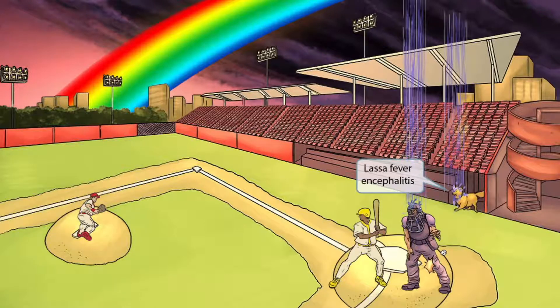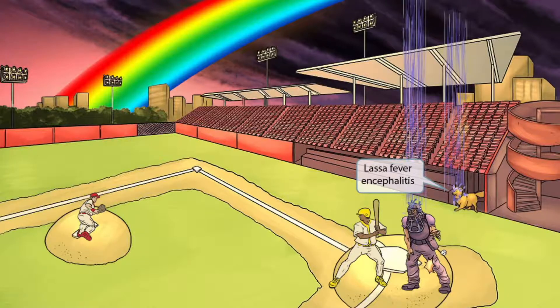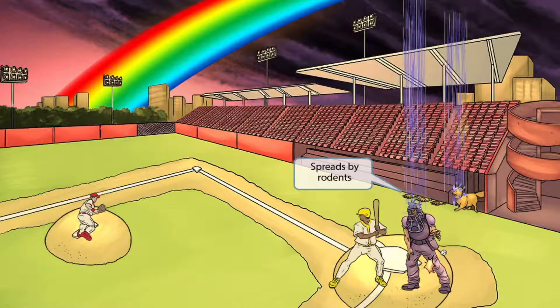The other arena virus you need to be familiar with for Step 1 is Lassa fever encephalitis. To help you remember this, we've shown a Lassie dog coming out of the dugout, because Lassie sounds kind of like Lassa. Again, the rain on top of the dog's head should make you think of encephalitis, so Lassie dog getting rained on for Lassa fever encephalitis. The Lassie dog came out of the dugout to chase these rodents, which are here to help you remember that Lassa fever encephalitis spreads by rodents.